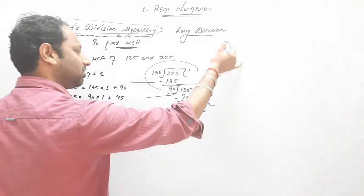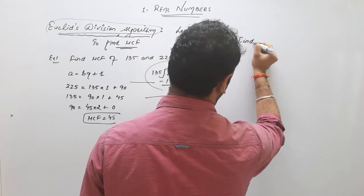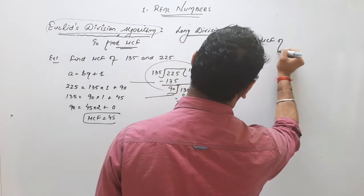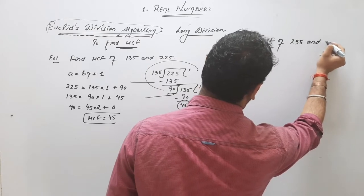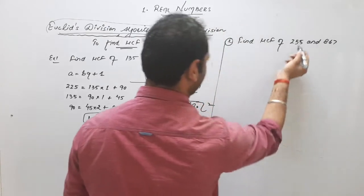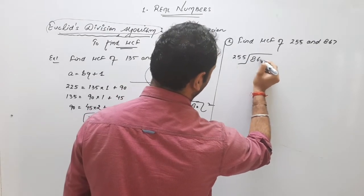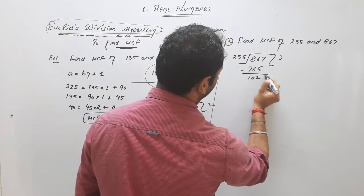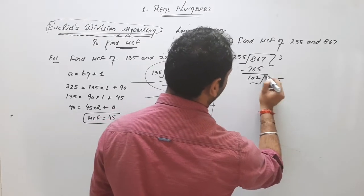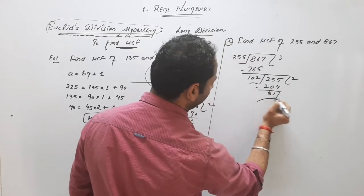I am taking one more example. It will be clear. Find HCF of 255 and 867. Same, this is a smaller number. 3, 765, 102, 255, 2204. This is 51, remainder.